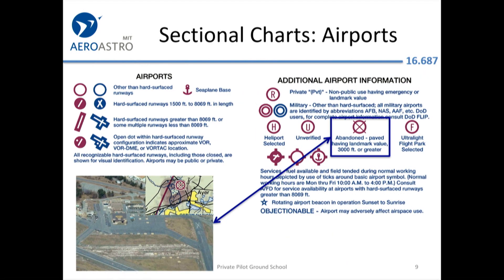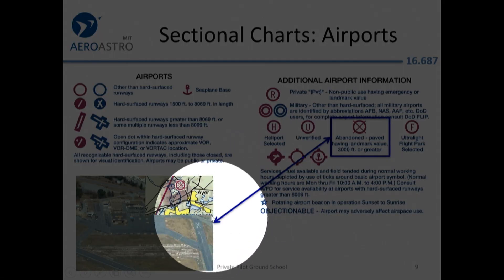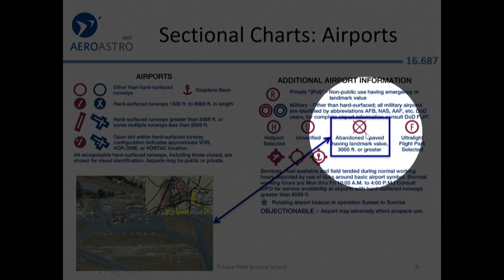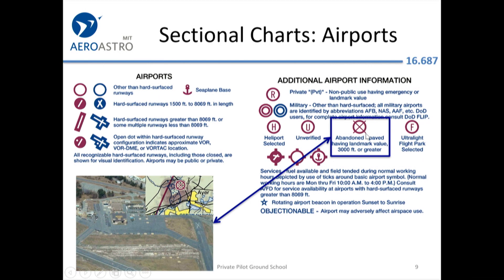Continuing along, there are also abandoned airports. The actual airport has an X on it, and you'll also see this X through the circle to represent that it's an abandoned place. It might still be a good option if there's an emergency and you're looking for a place to land, but it's not a good idea if you have the ability to get to a functioning open airport where you know the runway is clear.